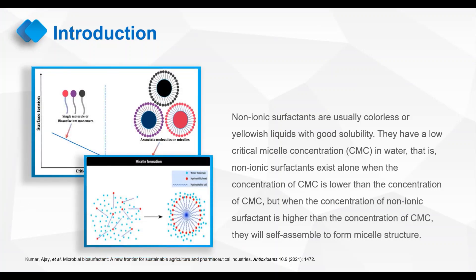Nonionic surfactants are usually colorless or yellowish liquids with good solubility. They have a low critical micelle concentration in water. That is, nonionic surfactants exist alone when the concentration is lower than the CMC.